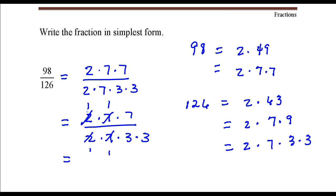So in the numerator, 1 times 1 times 7 is 7. In the denominator, we have 1 times 1 times 3 times 3. And that's it.